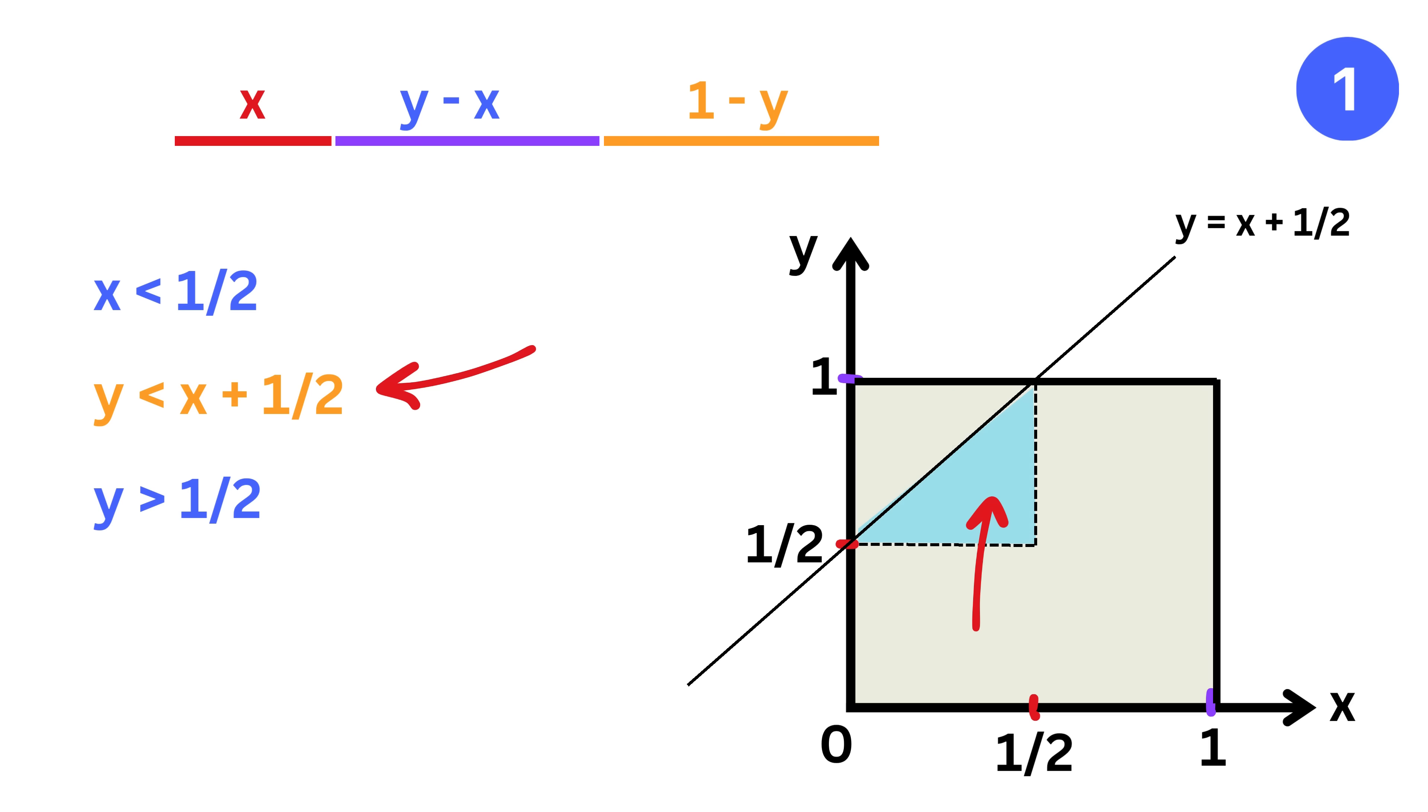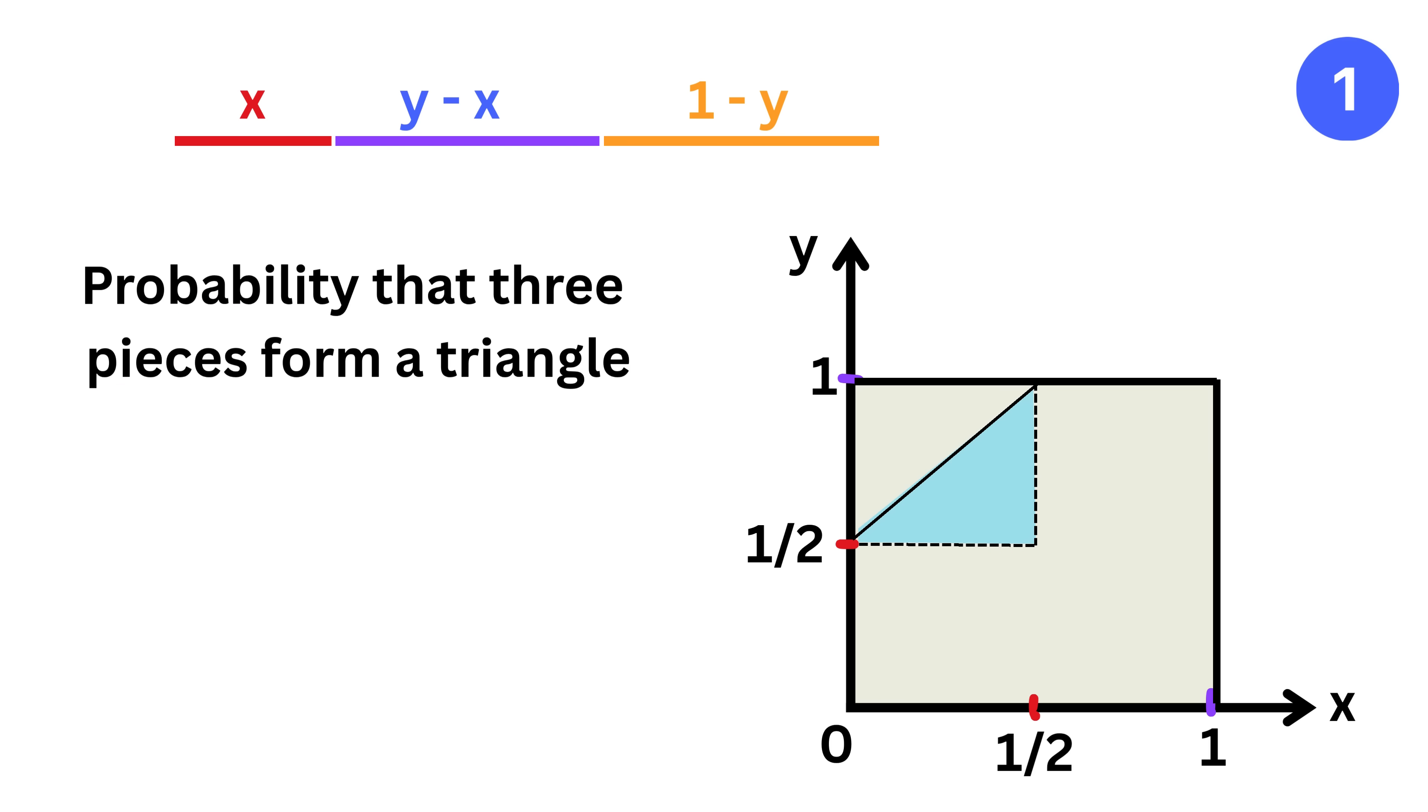Therefore, all the y values that correspond to less than x plus half will lie on this side of the line. For example, x and y are half and half in this region, so we get half less than half plus half, which is true. But for x equals zero and y equals one in this region, we get one less than zero plus half, which is not true. And thus our region of interest is this.